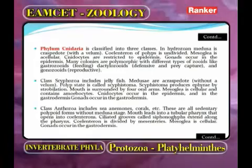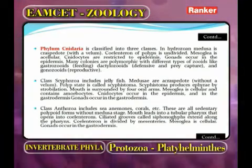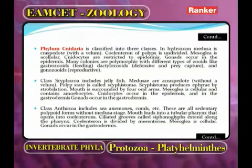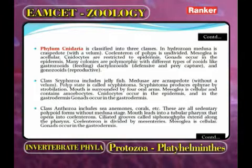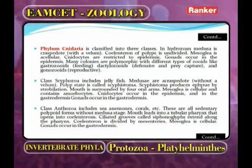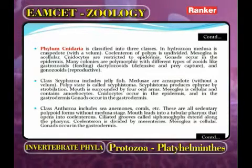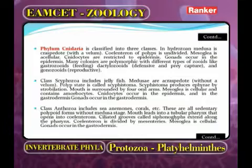In class Scyphozoa, radial symmetry is present. The polyp is also present but very much reduced — called scyphistoma. This reduced polyp by a process called strobilation gives rise to a larva called ephyra larva.